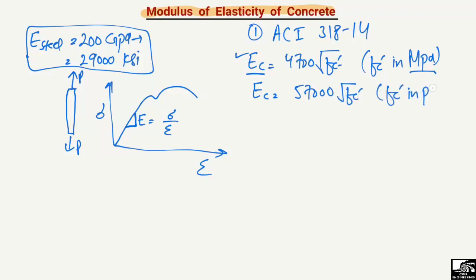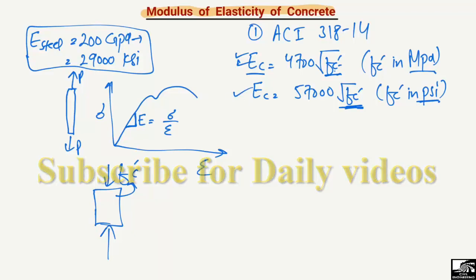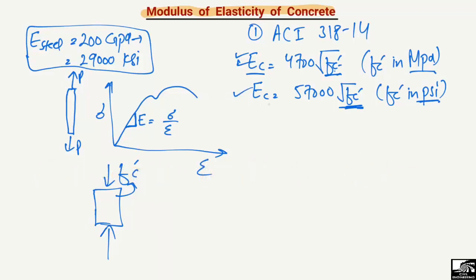ACI also proposes another equation: Ec = 57,000 × √(f'c), where f'c is in units of psi (pounds per square inch). Here, f'c represents the concrete compressive strength — determined by applying load on a concrete cylinder or cube. If you input f'c in psi, you get the modulus of elasticity Ec in psi.